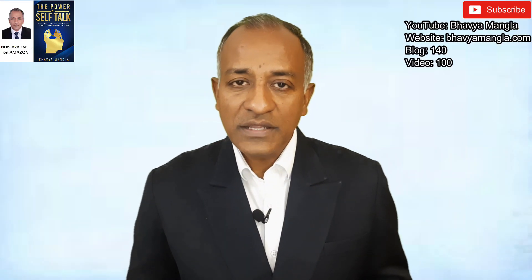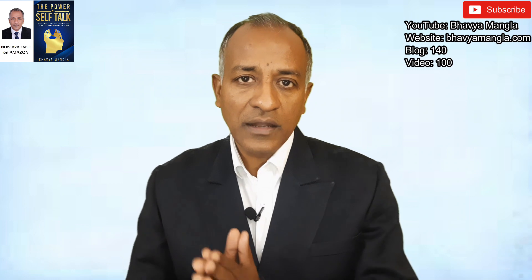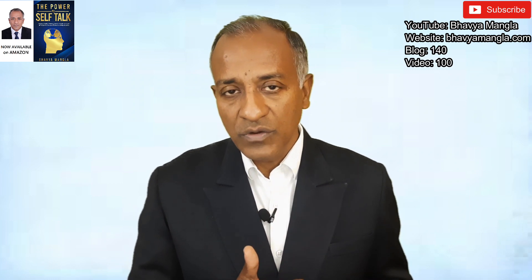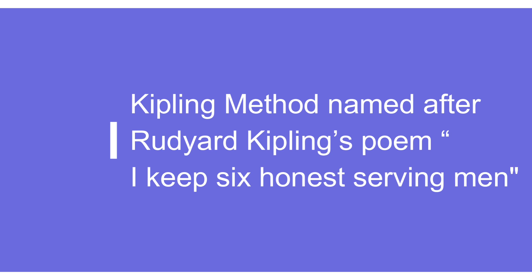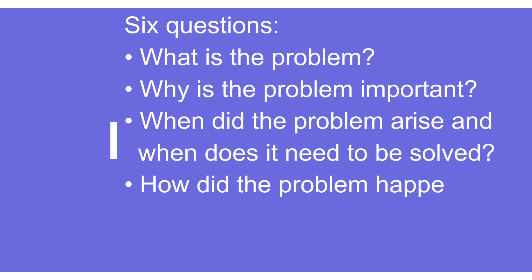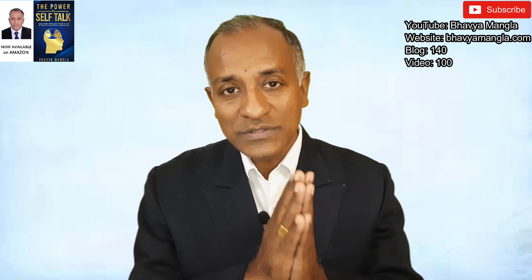Starting with step number one — how to define the problem. This step is most important because if we are not defining the problem correctly, whatever the next six steps we work on will not reach the right conclusion. As per the Kipling method, named after Rudyard Kipling's poem 'I keep six honest serving men,' it asks: what is the problem, why is it important, when did it arise and when does it need to be resolved, how did it happen, where is it occurring, and who does it affect? Once we answer all six questions, we can define the problem correctly.